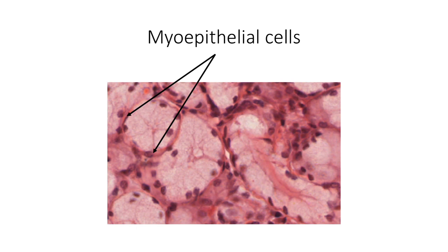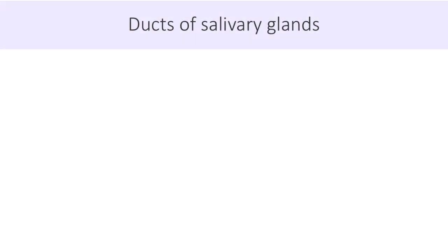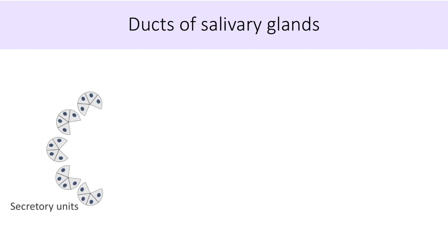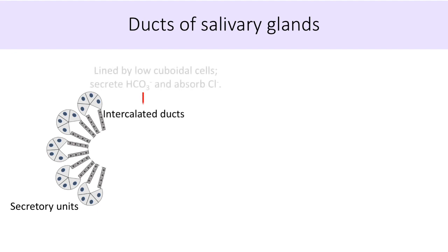Ducts of the salivary gland begin from the tubuloacinar secretory units. The intercalated ducts begin from the secretory acinus and are lined by low cuboidal cells. These ducts are more prominent in the serous and mixed types of salivary glands.